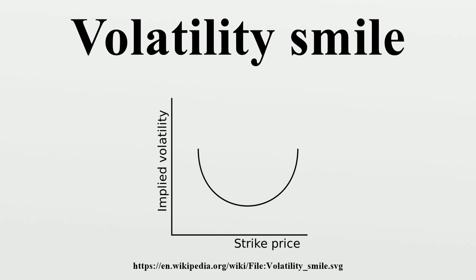In the Black-Scholes model, the theoretical value of a vanilla option is a monotonic increasing function of the volatility of the underlying asset. This means it is usually possible to compute a unique implied volatility from a given market price for an option. This implied volatility is best regarded as a rescaling of option prices which makes comparisons between different strikes, expirations, and underlyings easier and more intuitive. When implied volatility is plotted against strike price, the resulting graph is typically downward sloping for equity markets, or valley-shaped for currency markets.